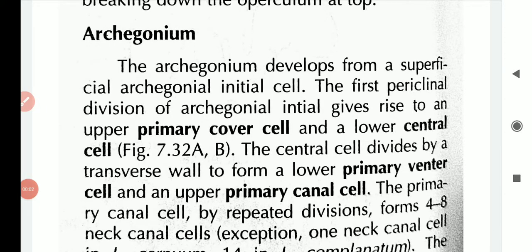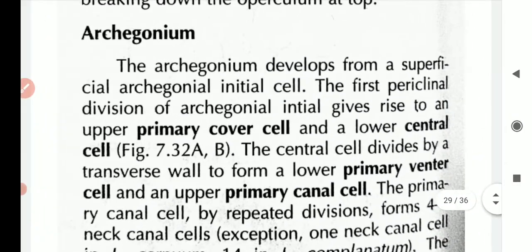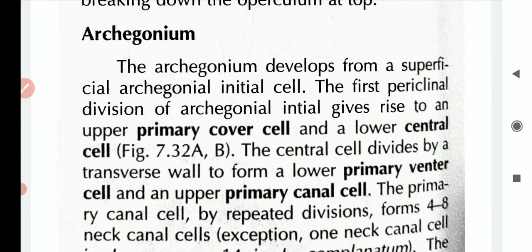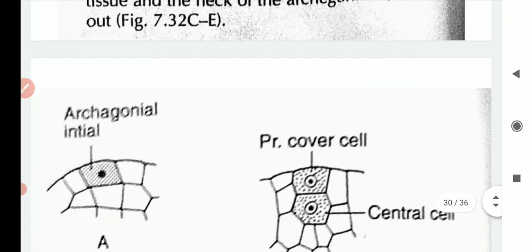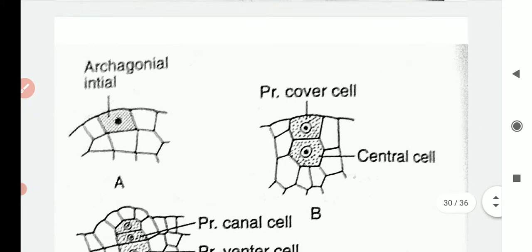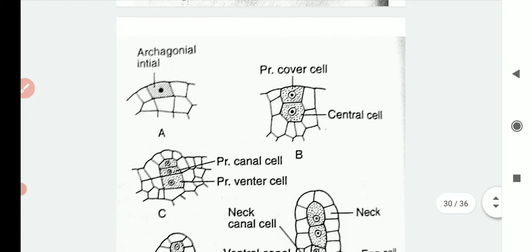Now let's look at the female bearing sex organ, that is the archegonium. Again, as I told you, we will look first at the diagram. First of all, then we will go to the text, because if we go directly to the text we get confused.